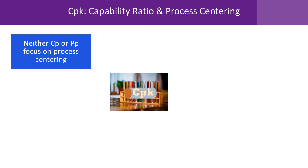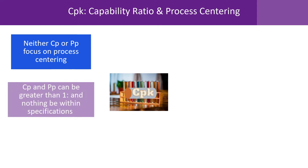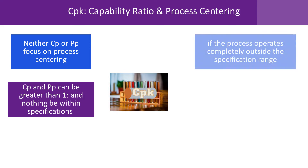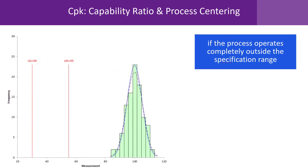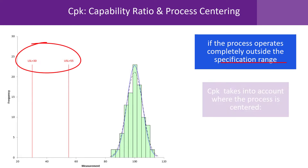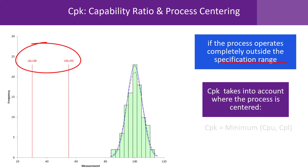Now, neither CP nor PP focus on process centering. So CP or PP can be greater than one and you think things are great, but nothing may be within specifications. The process can operate completely outside the specification range. So what you need is something that takes into account where the process is centered, and CPK does that.